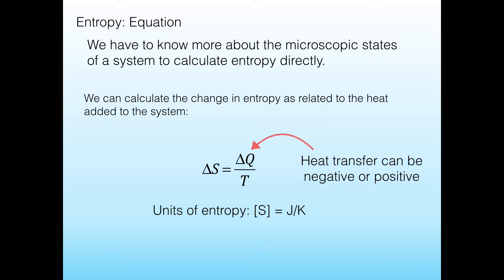This delta-Q term is the heat transfer, and of course, this can either be positive or negative. Temperature always must be positive, so that implies that the entropy can also be positive or negative.